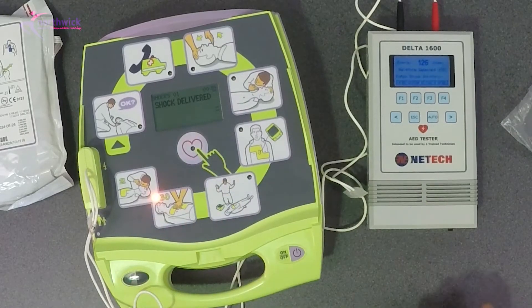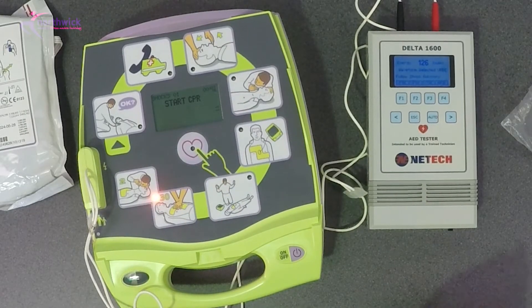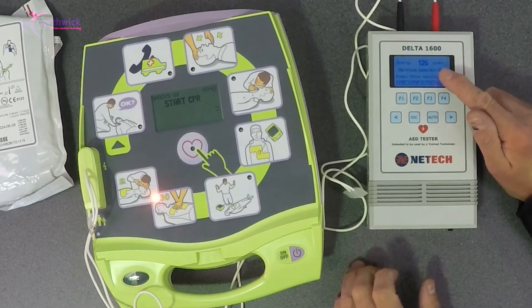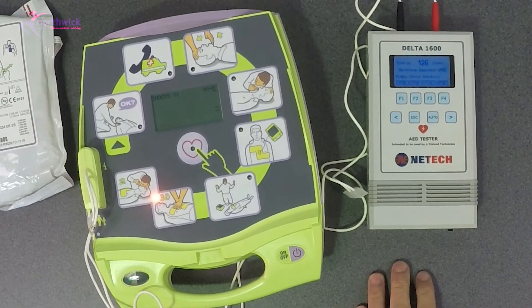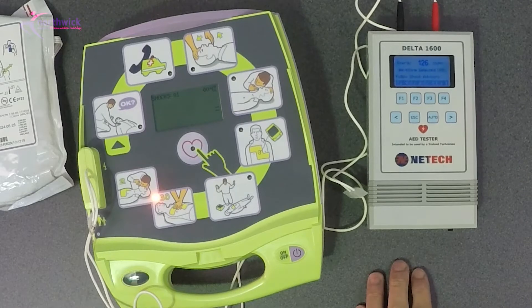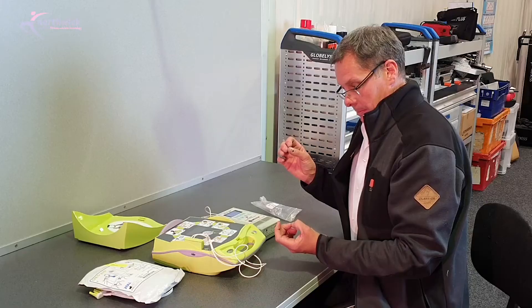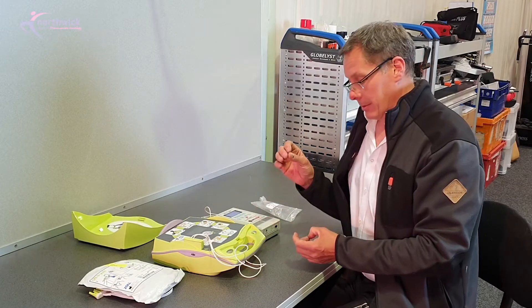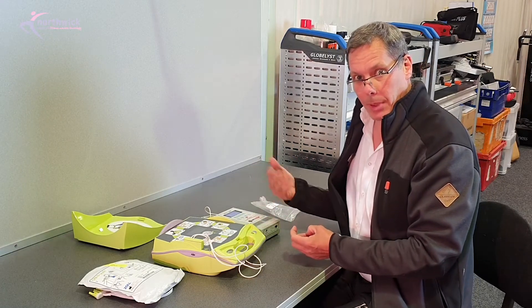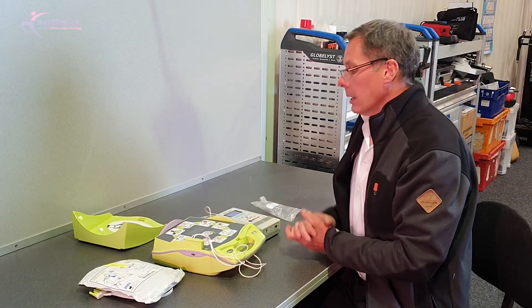Because this is a semi-automatic defibrillator, which means I want to press it. Shock delivered, start CPR. And on the test equipment we can see that we've got 126 joules of energy has been delivered. So not only are we able to actually continue CPR and check that the device is delivering a shock, we're also able to measure the amount of energy that's been delivered.